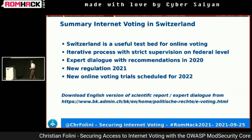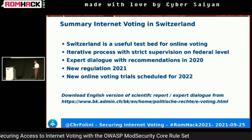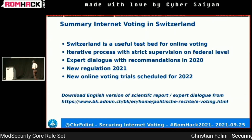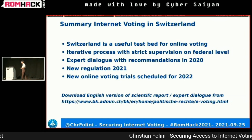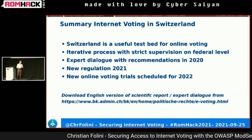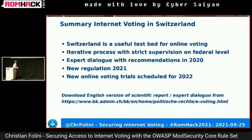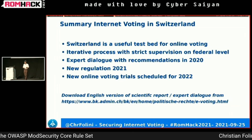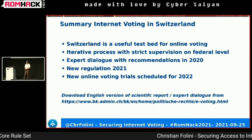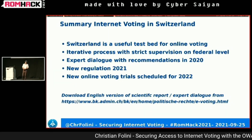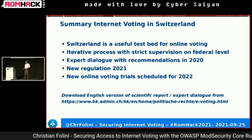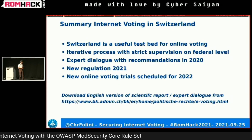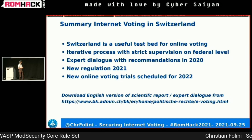Summary of internet voting in Switzerland: we've been doing this for 20 years. Switzerland is a useful testbed — we vote four times a year, giving lots of production experience. It's an iterative process with strict federal supervision, and they're not shy to block production systems two months ahead of federal elections. There was an expert dialogue and new regulation in 2021, and new online voting trials are scheduled for next year, probably aiming at half a percent of the voting population.